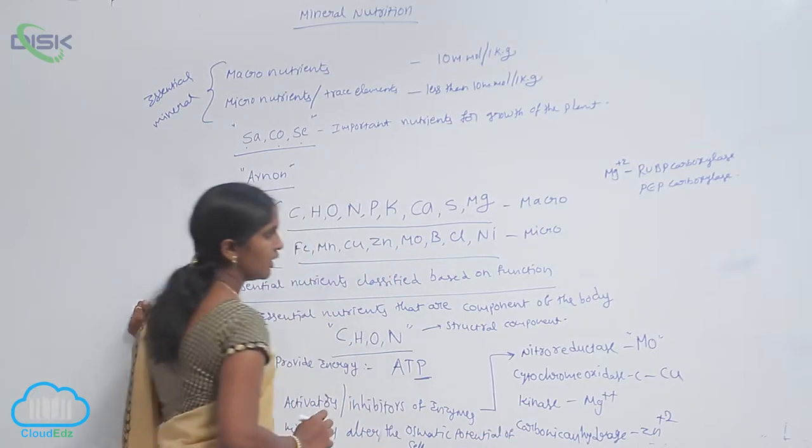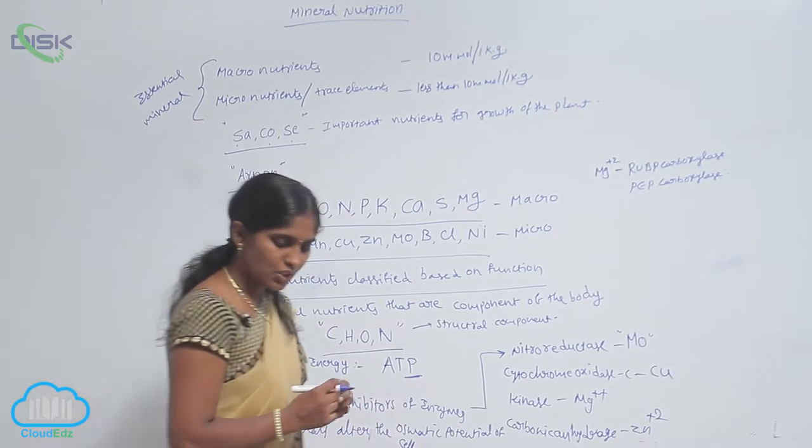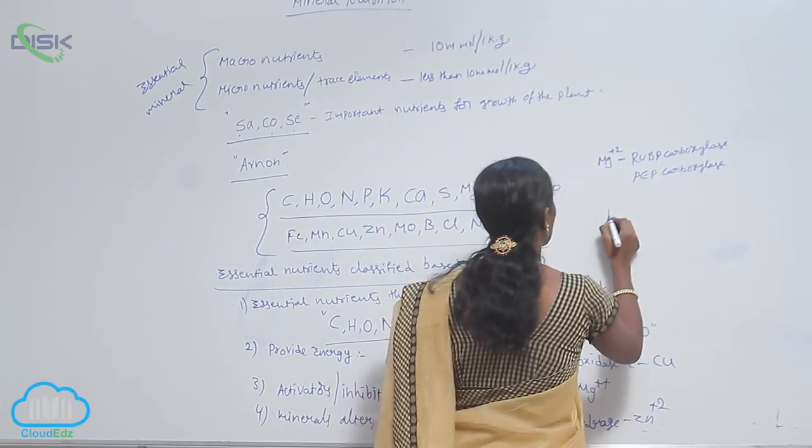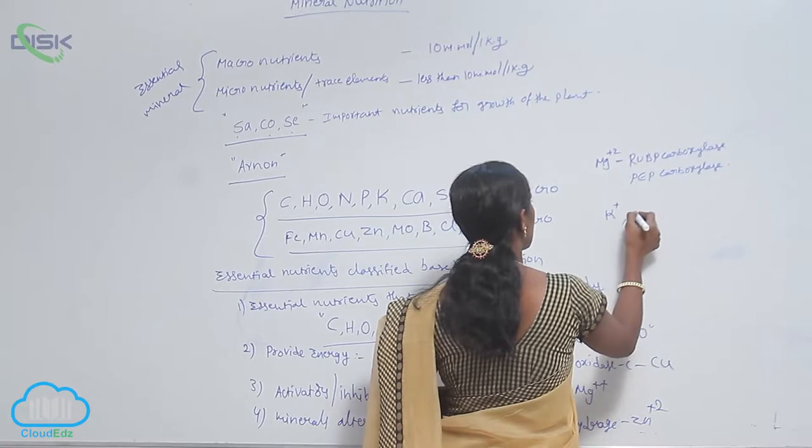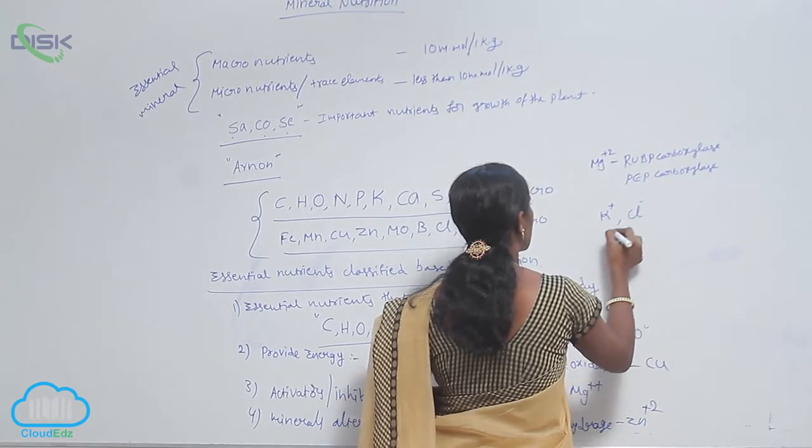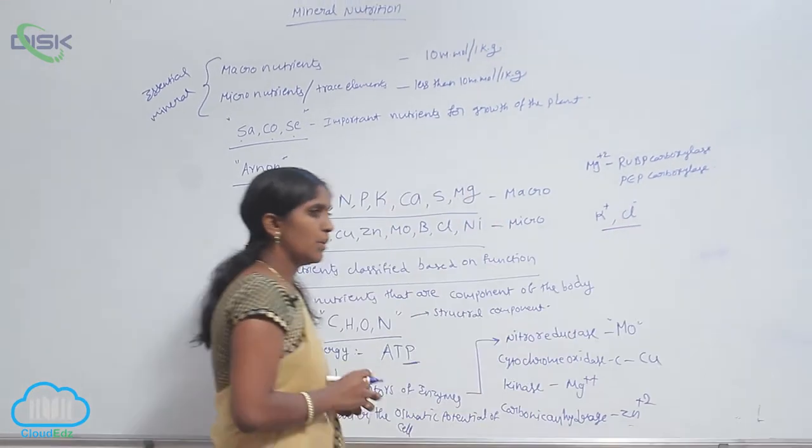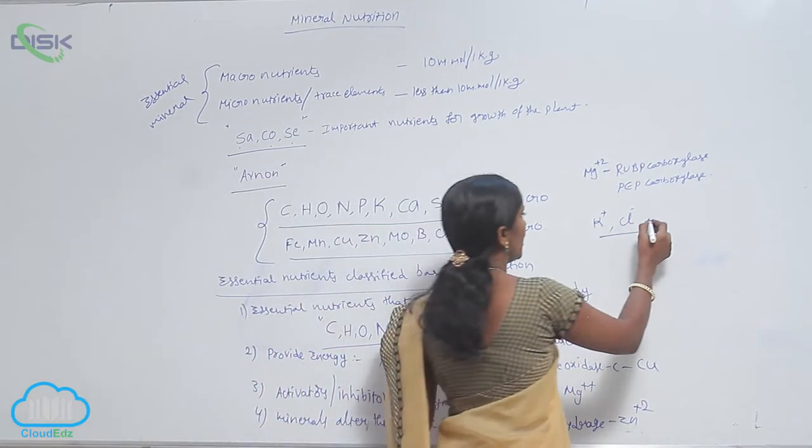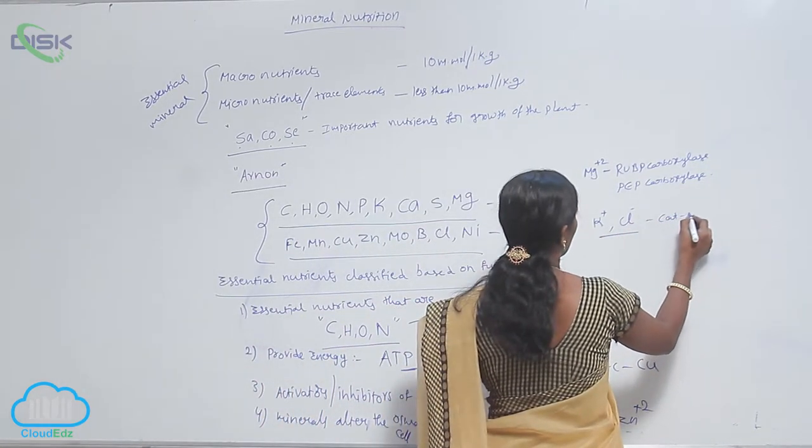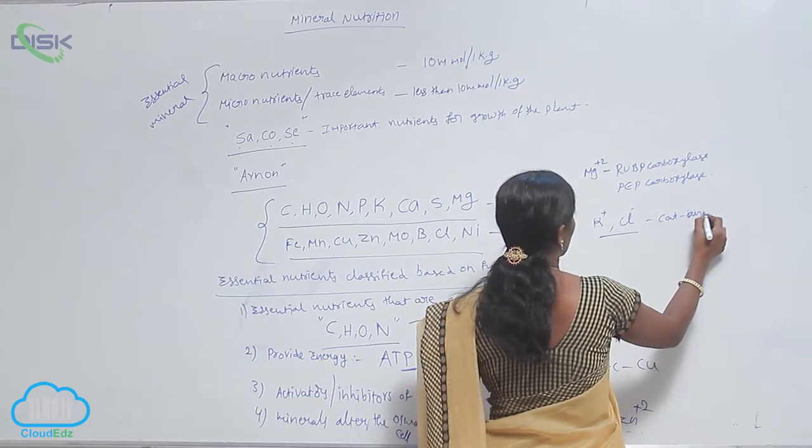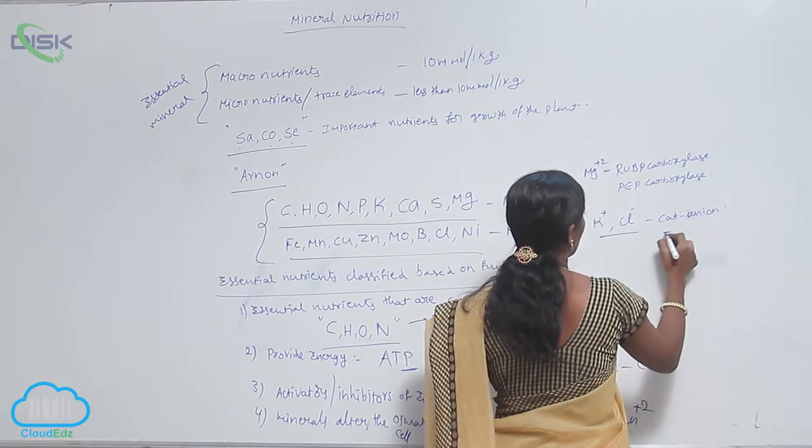They are calcium plus ions, K plus ions and Cl minus ions. They maintain the cation anion ratio, anion equilibrium.